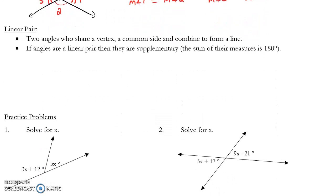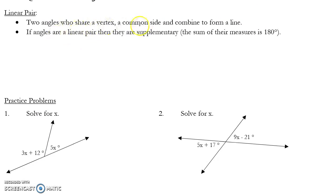A linear pair is two angles who share a vertex, a common side, and combine to form a line. Because they combine to form a line, we know that if angles are linear pair, then they are supplementary, which means their angle measures add to 180 degrees. Notice I didn't in the definition say that it has to be intersecting lines. It can be intersecting lines, like angles 1 and 2 here. These are angles that share a vertex and share a side. I know that angle 1 and 2 are a linear pair, concluding that the measure of angle 1 plus the measure of angle 2 equals 180 degrees.